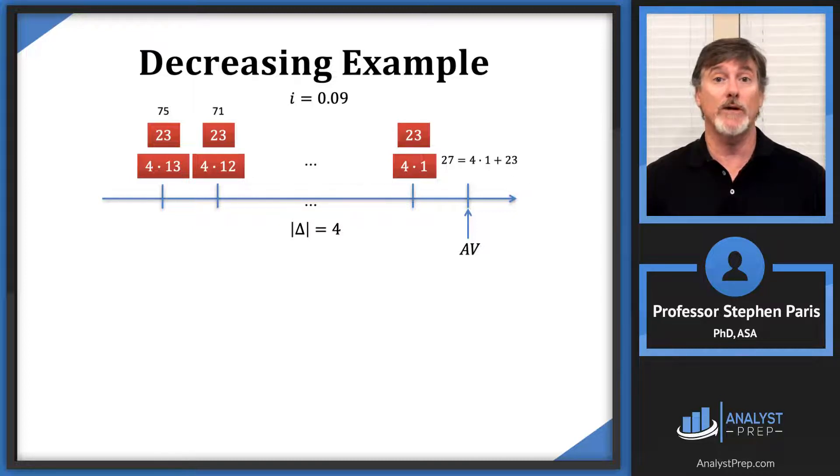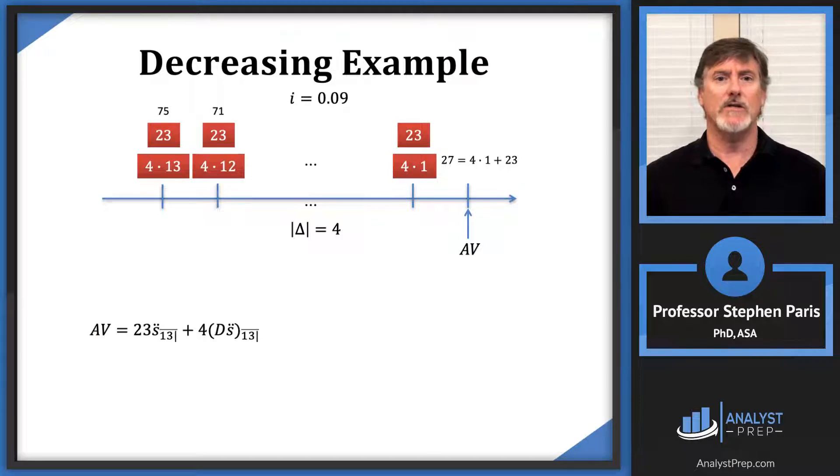When I factor out the 4, I get a decreasing, arithmetically decreasing, basic annuity. So the punchline here is that symbolically the accumulated value is 23 times s-double-dot-angle-13 plus 4 times the (D̈s̈)₁₃. I'm not going to do anything with the first term because I'm going to use the TVM buttons on the calculator to value that.